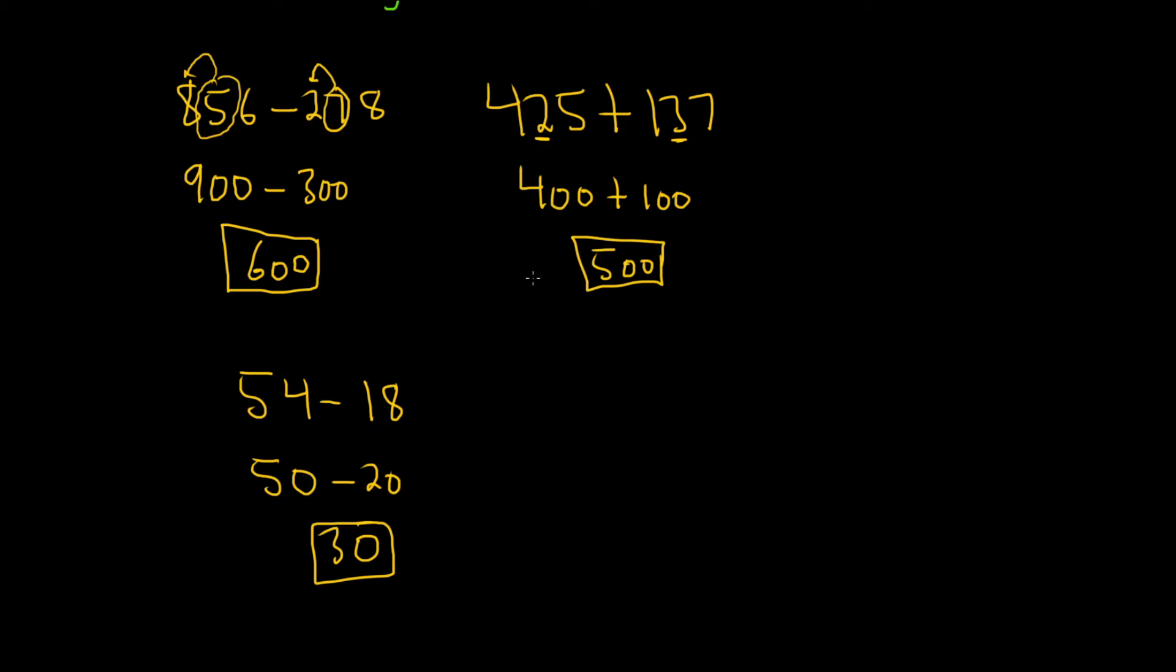Let's do another one. Let's say we had 93 minus 28. Again, the biggest place value here is the 10s place. So you want to round each one to the 10s place. So the 93 will round down because the 3 is smaller than 5, so it's 90. And then this one will round up because the 8 is bigger than 5, so it's 30.